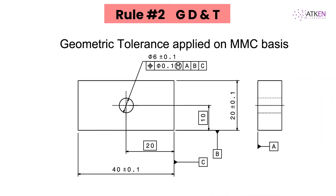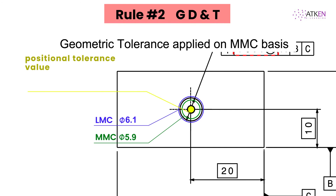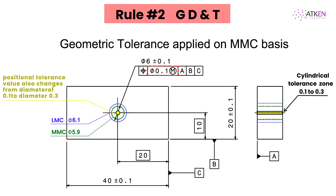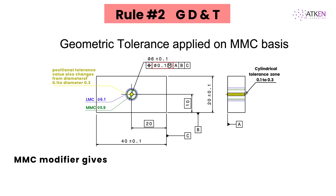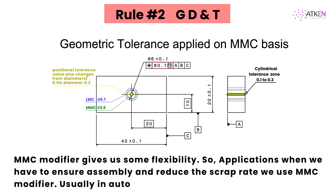Let's take an example with the MMC modifier applied to positional tolerance. When the hole is manufactured at MMC of diameter 5.9, a positional tolerance of diameter 0.1 holds good. But when the hole dimension departs from MMC of diameter 5.9 to LMC of diameter 6.1, the positional tolerance zone value also changes from diameter 0.1 to diameter 0.3. MMC modifier gives us some flexibility, so in applications where we have to ensure assembly and reduce the scrap rate, we use the MMC modifier — usually found in automobile parts.